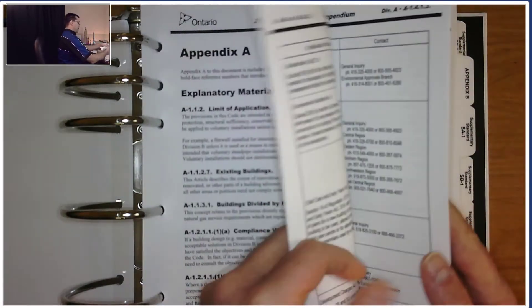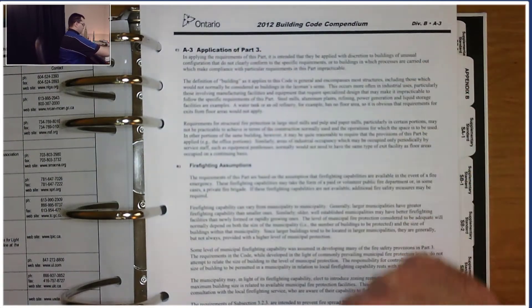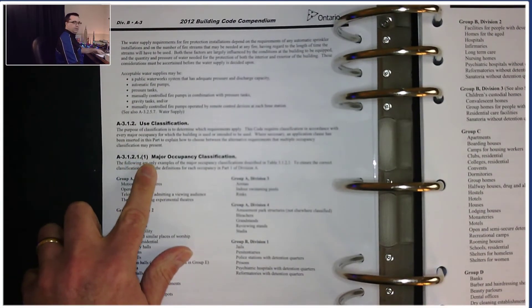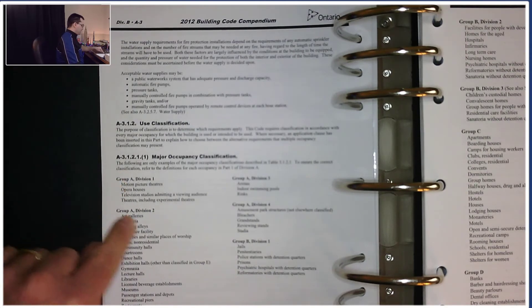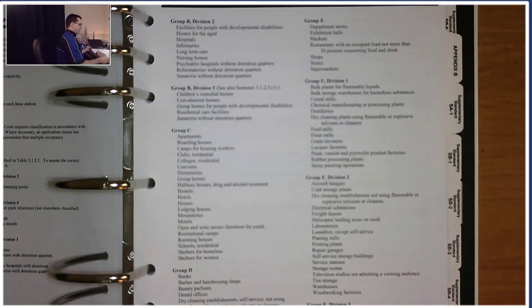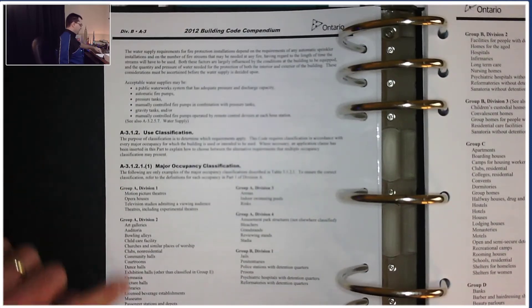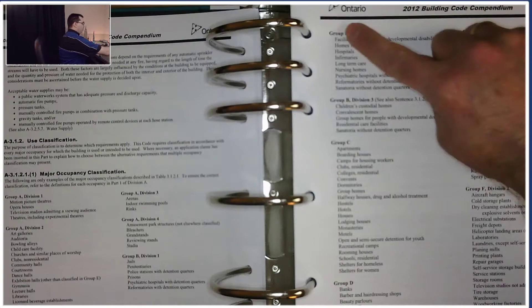The idea is that in Appendix A you'll actually find explanations or extra information in plain English about things you find in Volume 1, which is super cool because Volume 1 can be difficult to understand. The cool thing is if we can find 3.1.2.1 in here, maybe we'll find some extra information in plain English. I'm looking through and I find Part 3, and boom! Look at this. 3.1.2.1.1 Major Occupancy Classifications.